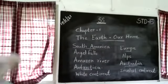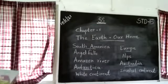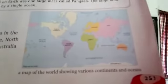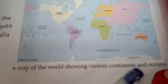Next we studied about Antarctica. Can you see the location of Antarctica on this map? It is here, near the Southern Ocean. Antarctica is the fifth largest continent.